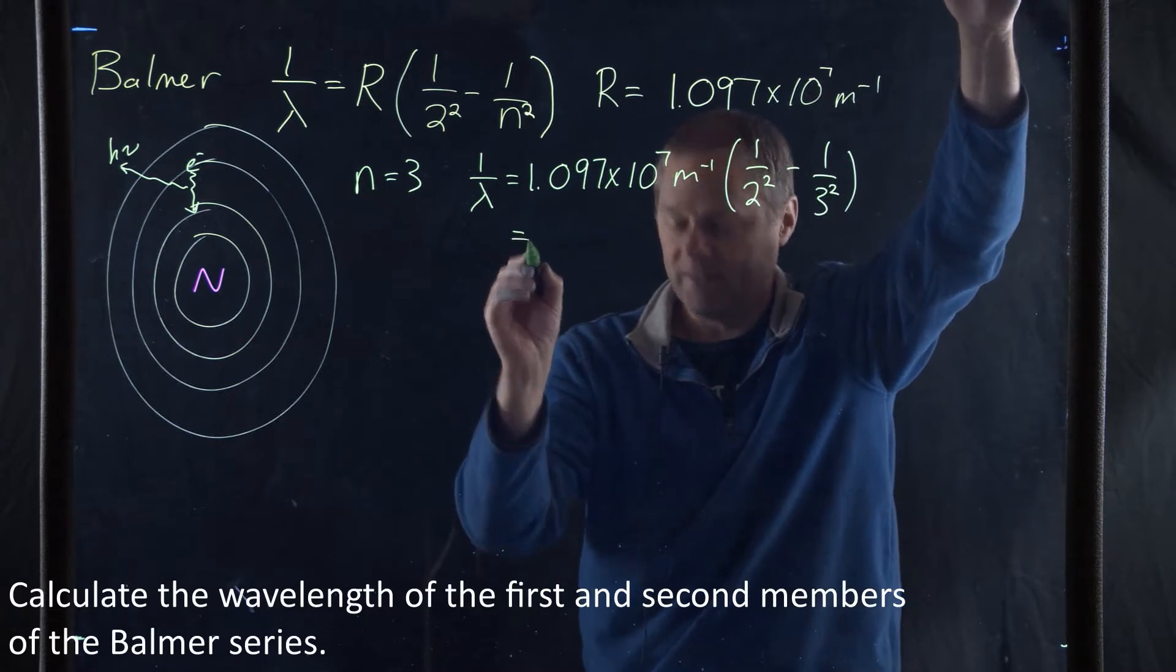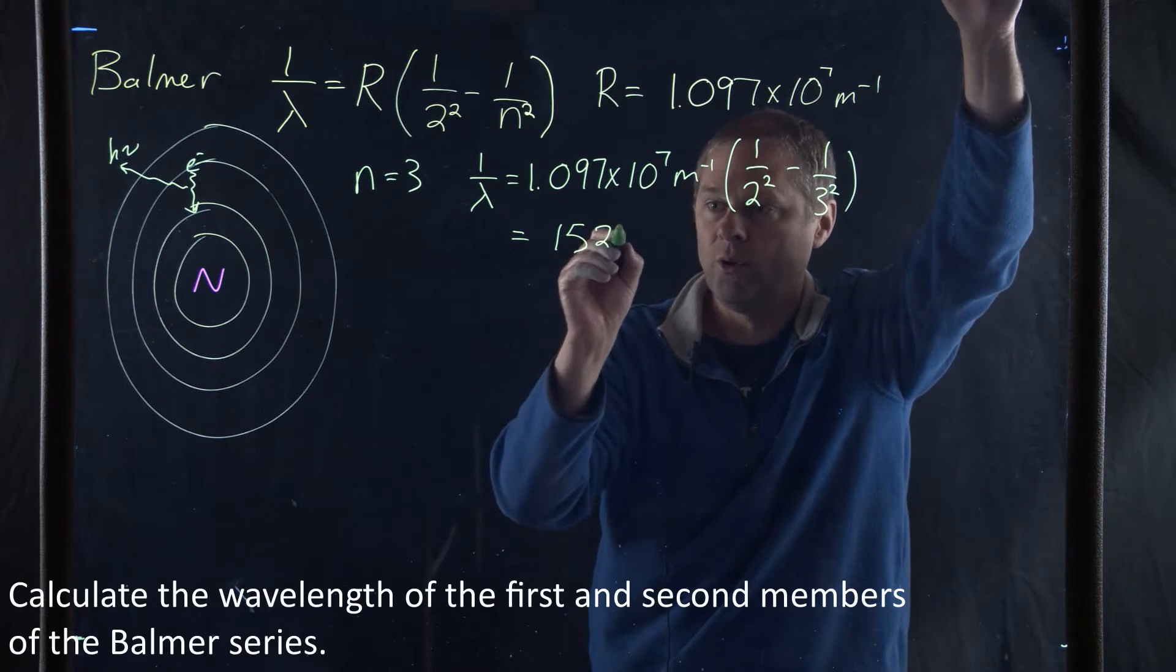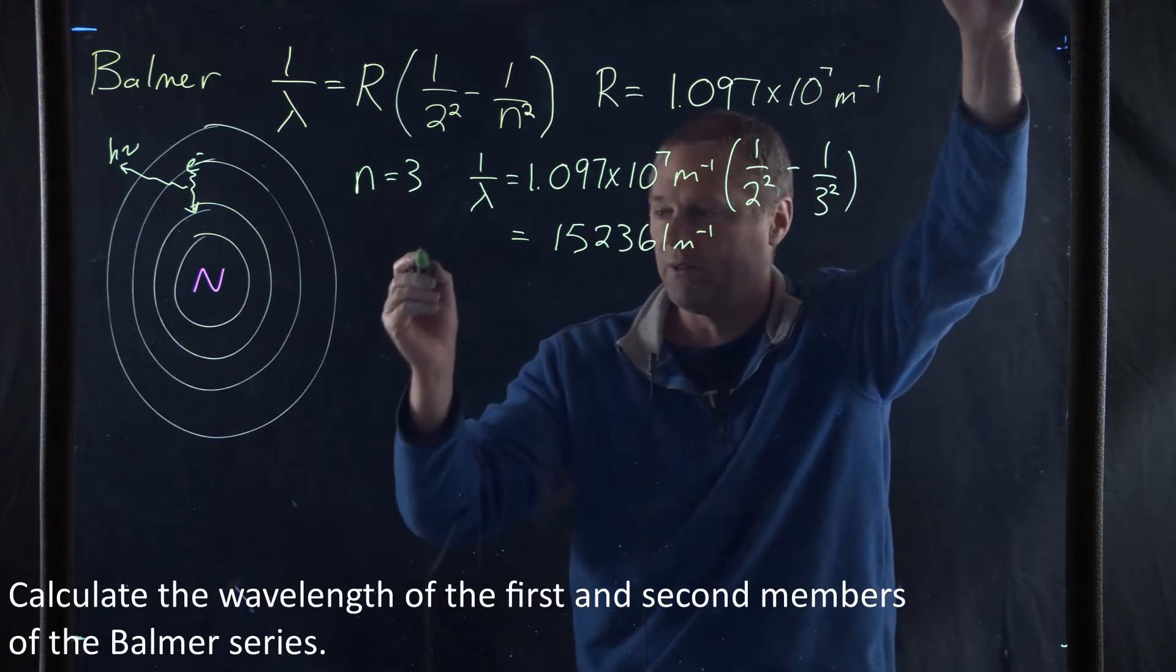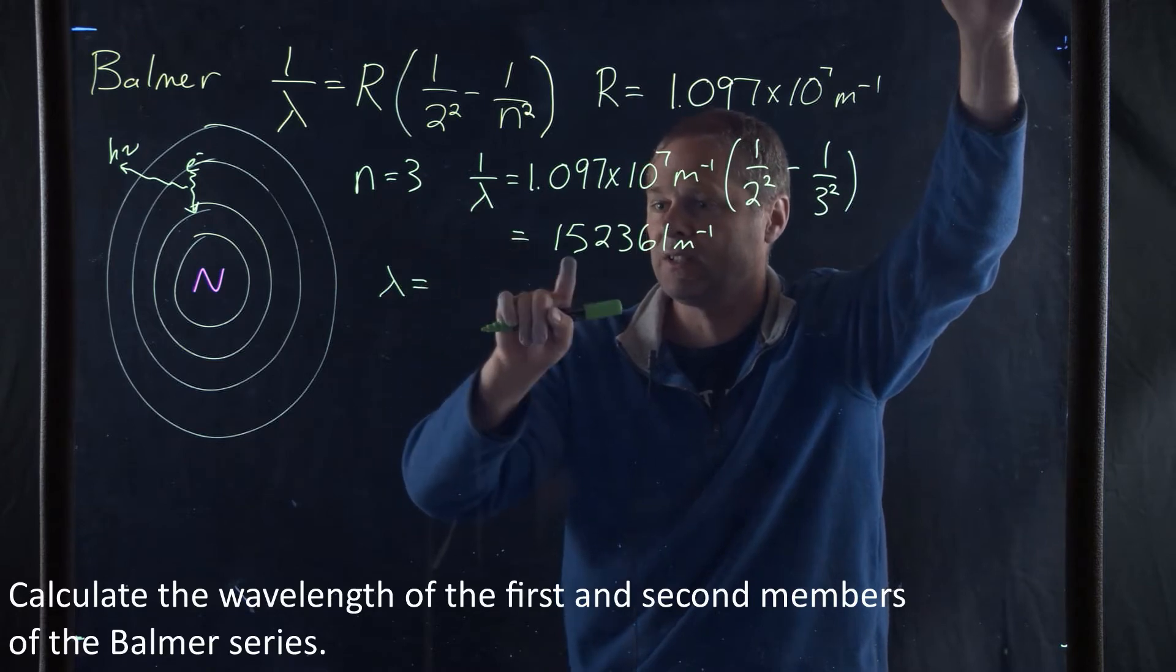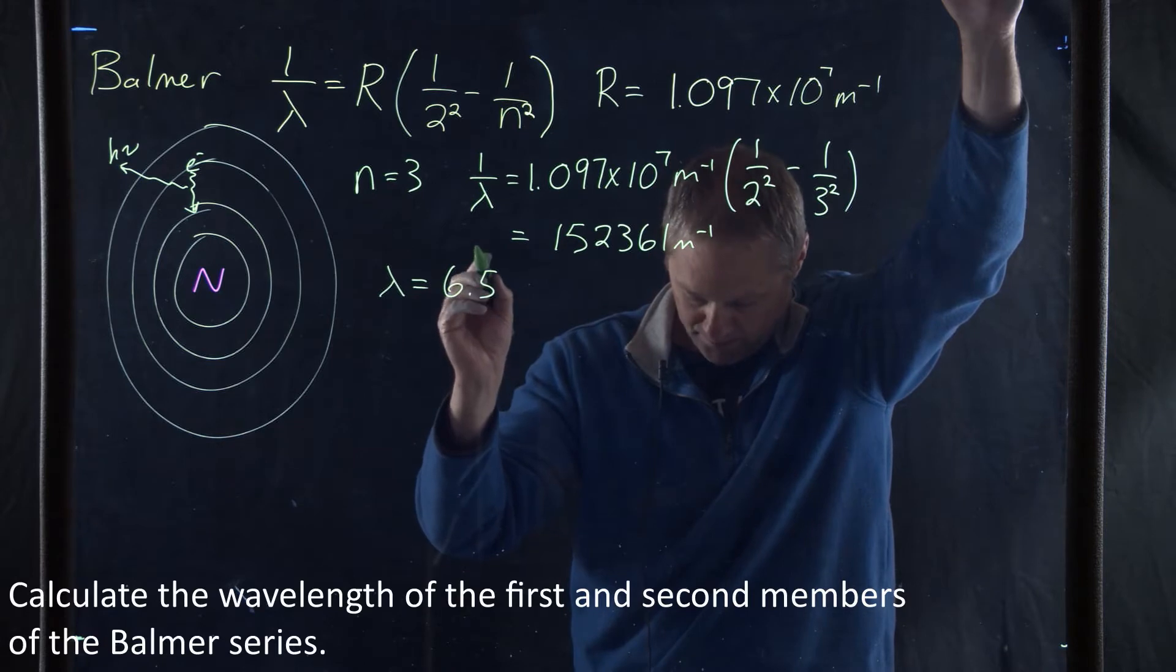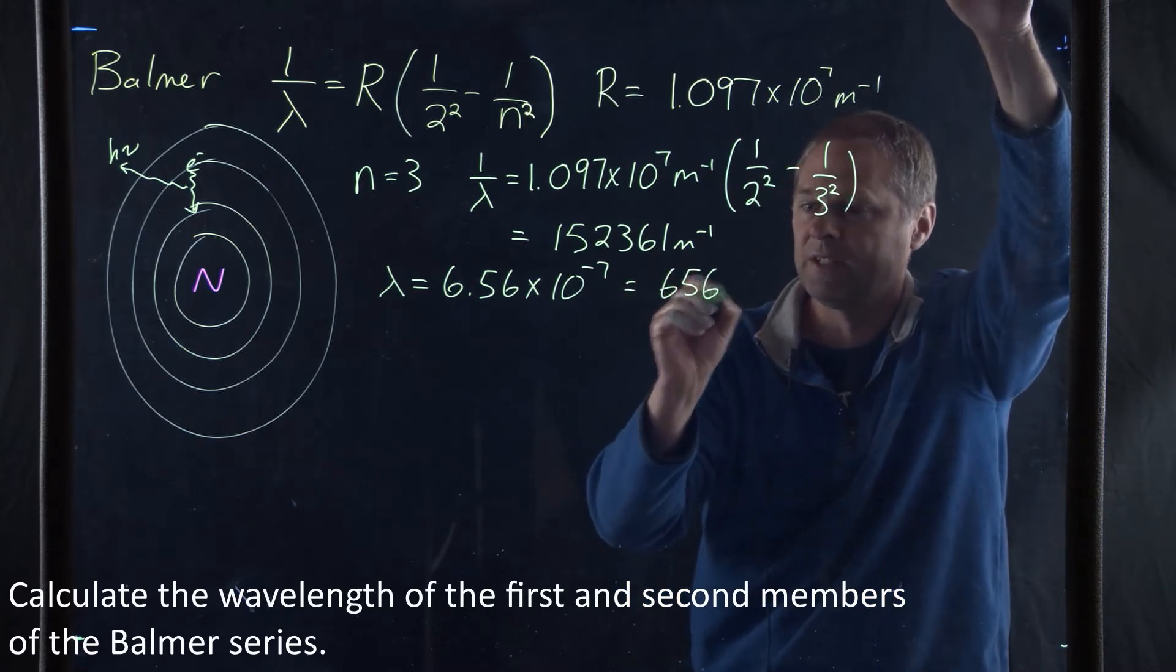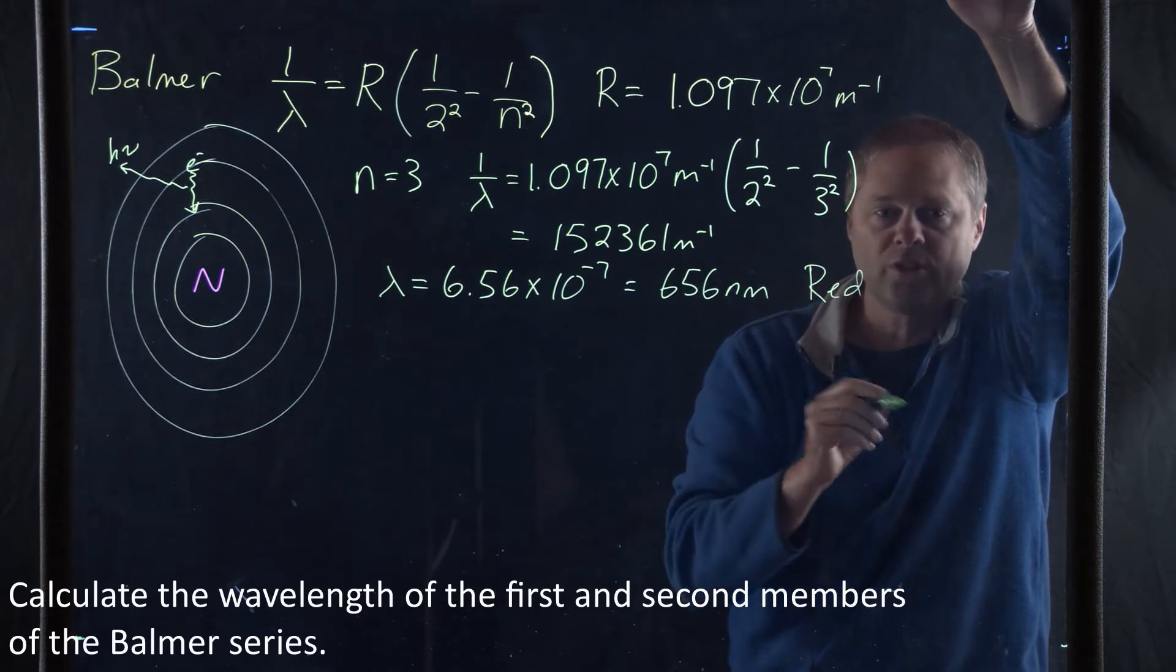We calculate this, and what we end up getting is 1.52361 inverse meters for the inverse wavelength. Such that now our lambda, we take the inverse of this, take the inverse of that, and what we get is we get 6.56 times 10 to the negative 7th, which is equal to 656 nanometers, which is the red portion of the spectrum.